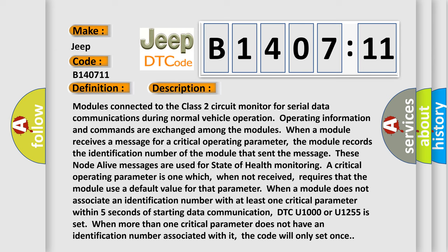DTC U1000 or U1255 is set. When more than one critical parameter does not have an identification number associated with it, the code will only set once.